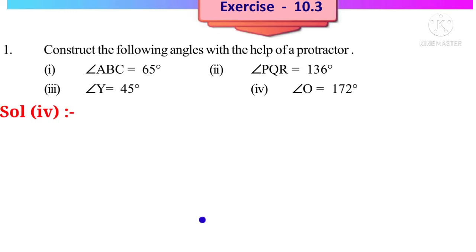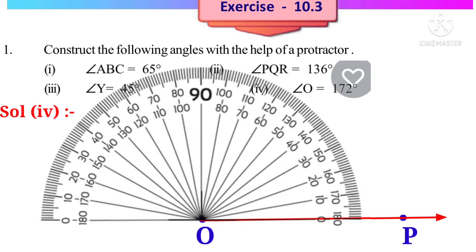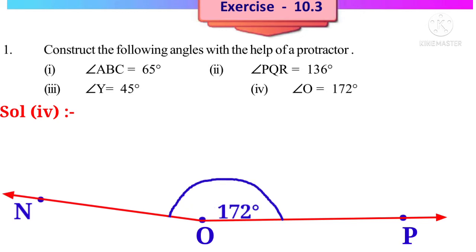Fourth angle NOP = 172 degrees. Take any two points O and P and draw a ray through them. Put the base of the protractor on line OP with center at O. On the right-hand side lower scale, going from right to left, two lines after 170 — that is 172. Put a point and name it N, then draw a ray through ON. Angle NOP is 172 degrees.